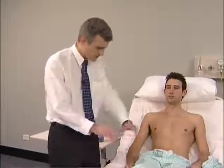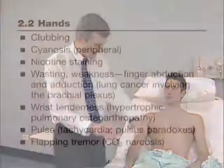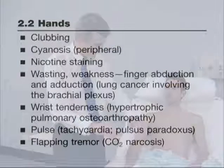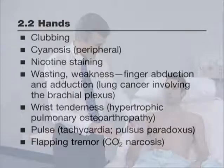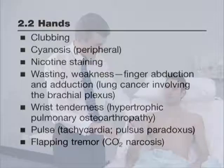The detailed examination begins with the hands. Look for clubbing, peripheral cyanosis, and tar staining. Squeeze the wrist to detect the tenderness of hypertrophic pulmonary osteoarthropathy.